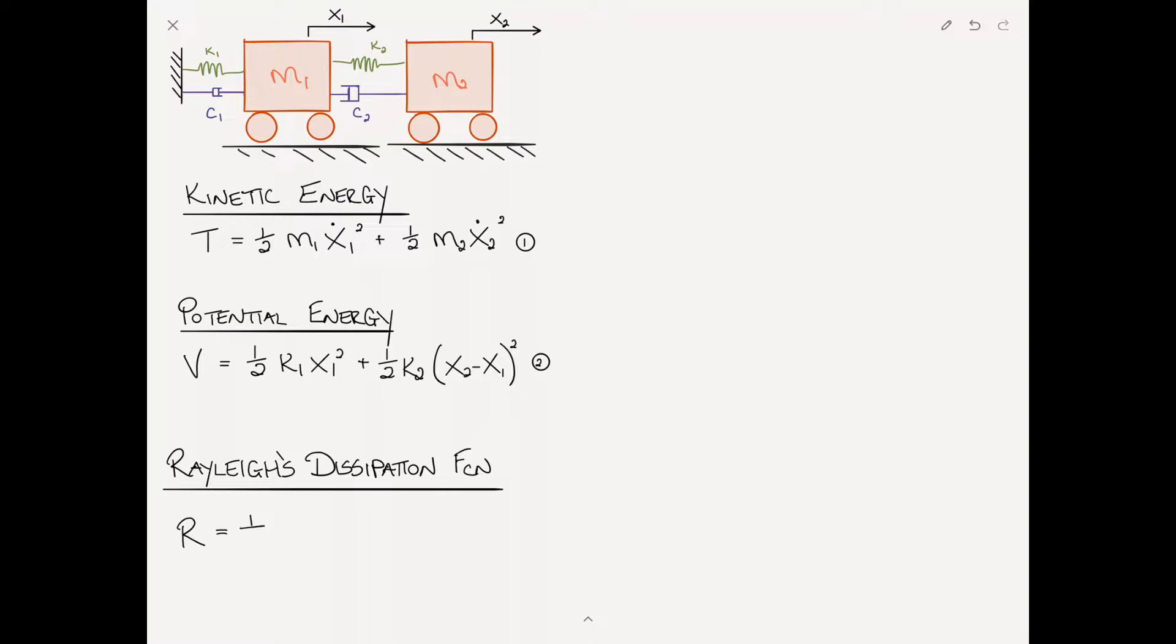Looking at the first damper, it's one half times the damping constant c1 times the velocity squared. The velocity of this end is zero because it's attached to a wall, and the other end is the velocity of mass one. So it's one half c1 x1 dot squared. Similarly, the relative velocity for damper c2 gives us one half c2 times x2 dot minus x1 dot squared. We'll call that equation 3.